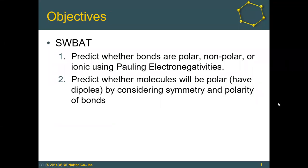Welcome back, scholars, to another chemistry video. This video is about polar molecules and polar bonds. By the end of this video, you should be able to predict whether bonds are polar, nonpolar, or ionic using Pauling electronegativities. The second objective is that you should be able to predict whether molecules will be polar themselves — meaning the molecules have dipoles — considering both symmetry and the polarity of the bonds.